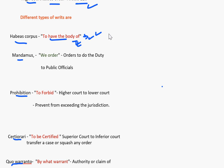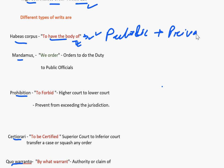Habeas Corpus can be issued against both public as well as private individuals. This is an important fact — please keep it in mind. It can be asked in the examination whether the Habeas Corpus writ is issued against a private individual or not.